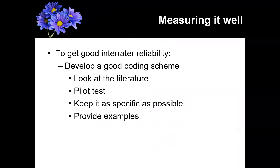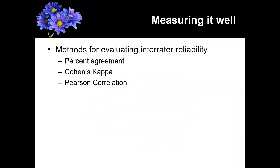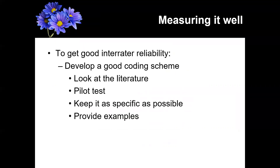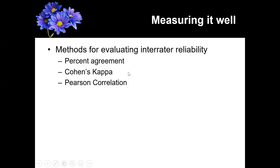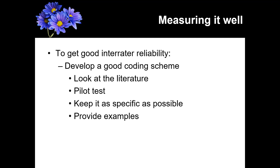So that's Pearson correlation — looking at whether two different researchers give correlated ratings. There are a couple of ways to improve inter-rater reliability. One is to develop a good coding scheme: precisely define what it is they're measuring rather than leaving it open to interpretation. A good way to do this is to look at the literature.